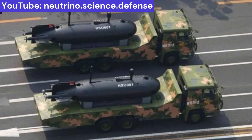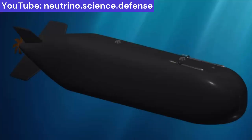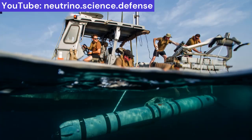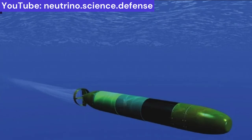Unmanned underwater vehicles (UUVs) are all systems that are able to operate below the water surface without having any personnel on board. In principle, such vehicles can also operate on the water surface and may also have personnel on board, but the primary purpose is to operate in a submerged state without a vehicle operator on board. A primary distinguishing feature is the method of control, since this has a significant influence on the degree of autonomy, the range, and the driving profile.